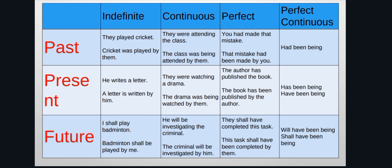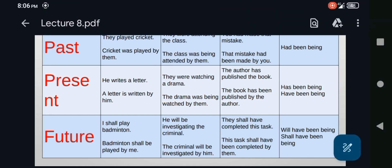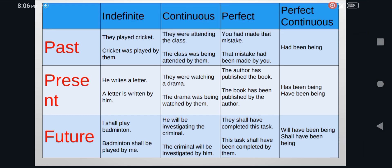For present indefinite: 'He writes a letter' becomes 'A letter is written by him.' 'A letter' is the object, 'writes' is the verb, and 'he' is the subject. For future indefinite: 'I shall play badminton' becomes 'Badminton shall be played by me.'